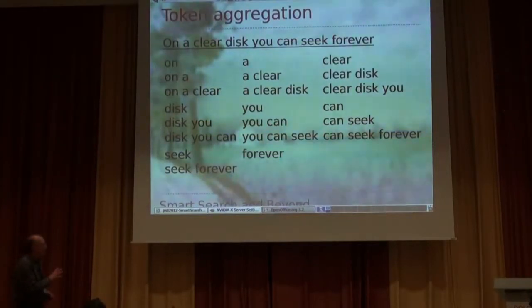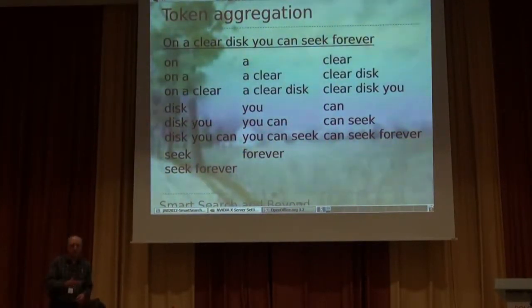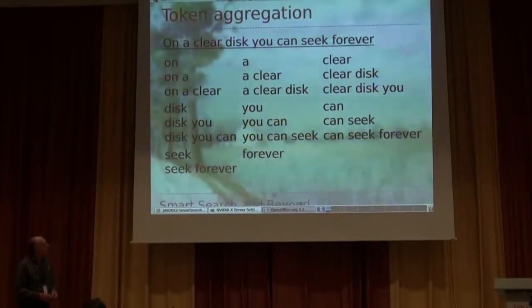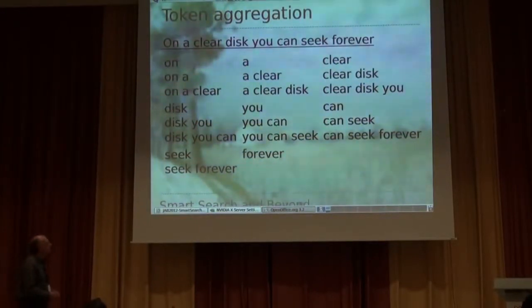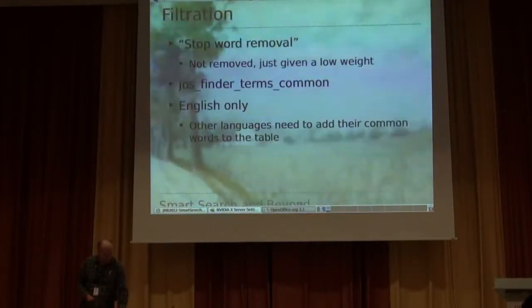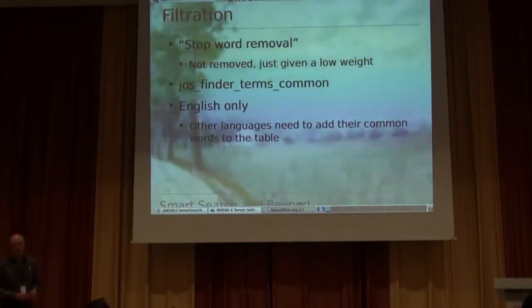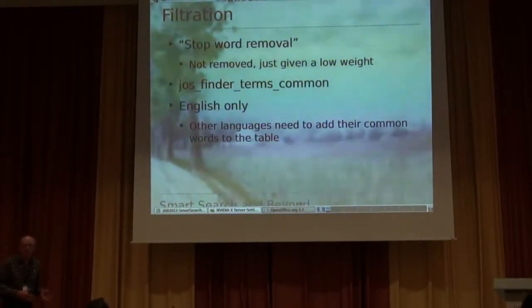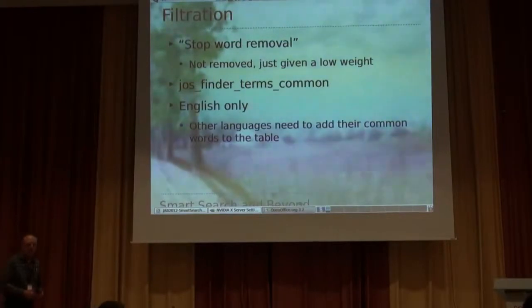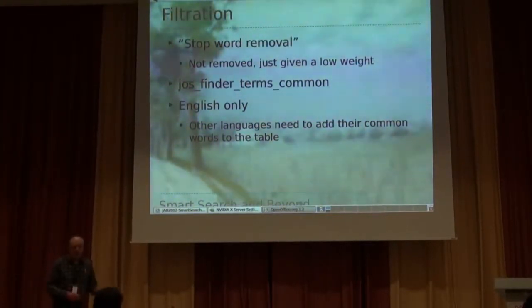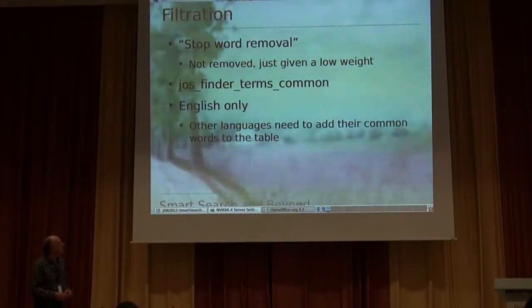This is important because it actually improves the quality of the search. If you type a sentence into your search query, you're going to get much better search results because you can focus down on the things that are really important. Auto-suggestion particularly works well with that. What the textbooks call filtration often involves removing stop words — these common words which are not very useful in search queries — and actually dropping them entirely. Smart Search doesn't drop them; it just gives them a lower weight in the search.